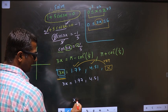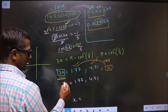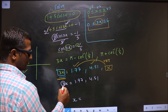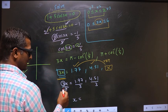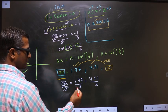Now to get the values for x I should remove this 3. To remove 3 I divide by 3. So this cancels out, here I get x.